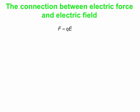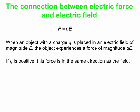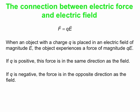Here's our connection between electric force and electric field. The vector F is Q, the charge, times the electric field. In words, when an object with a charge Q is placed in an electric field of magnitude E, the object experiences a force of magnitude QE. Force and field are both vector quantities, so we should talk about directions as well. If you have a positive charge, then the force and the field are in the same direction. If you have a negative charge, then you multiply a negative by the vector E, and the force is in the opposite direction — the force is opposite to the field if Q is negative.